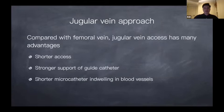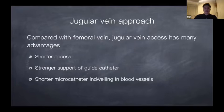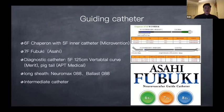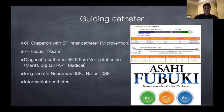We use the jugular venous approach in all cases compared to the femoral vein. The jugular vein access has many advantages: shorter distance, stronger support of the guiding catheter, and shorter microcatheter length within the blood vessel. We always use a 6 French Chaperon with 5 French inner catheter from Microvention, and a diagnostic catheter — 5 French 125 cm vertebral curve from Merritt — and a pigtail diagnostic catheter from APT Medical. Sometimes we also use long-shaped and intermediate catheters.